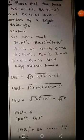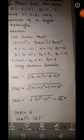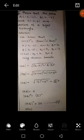Question number five: prove that the points A, B, and C are the vertices of a right triangle. To prove a right angle triangle, we show a 90-degree angle using the Pythagorean theorem: hypotenuse² = base² + perpendicular². First, we find all three sides.